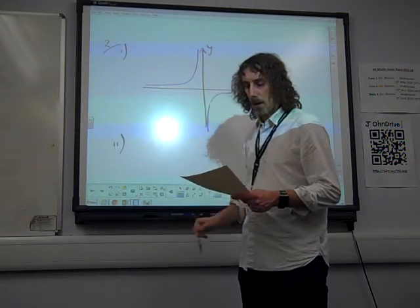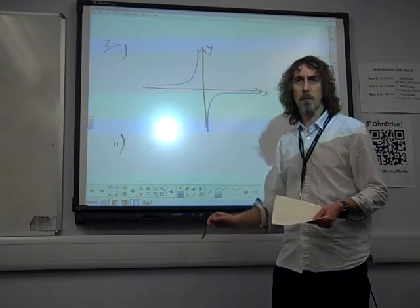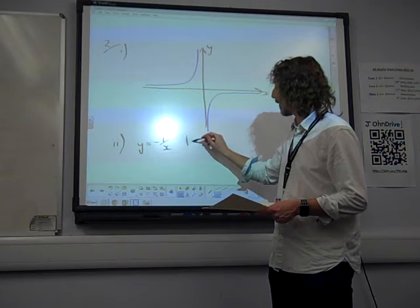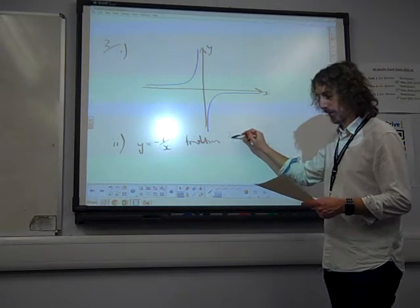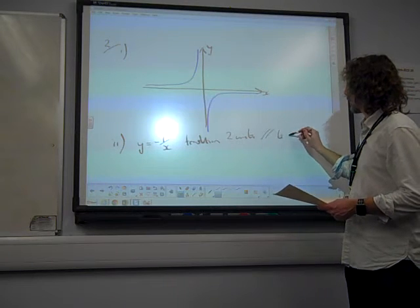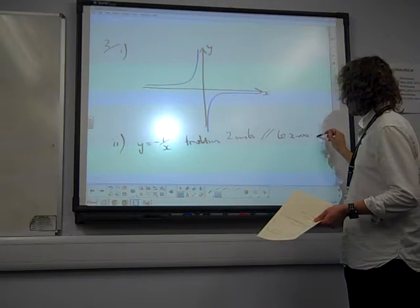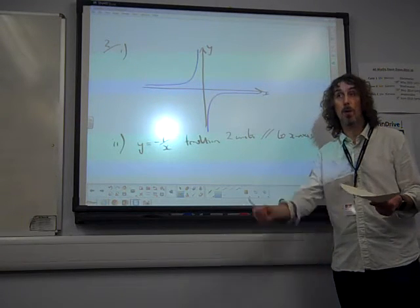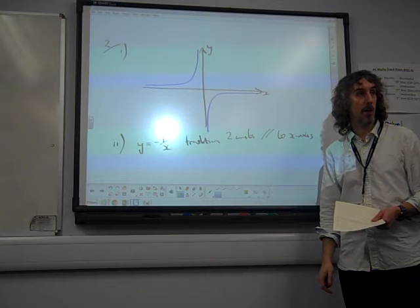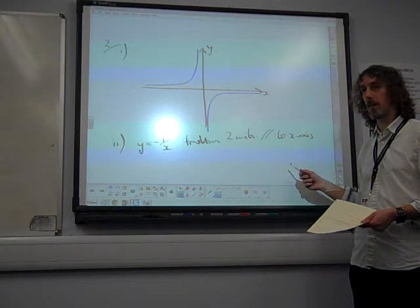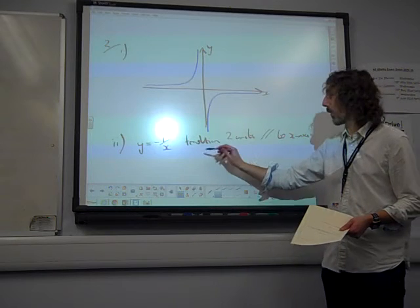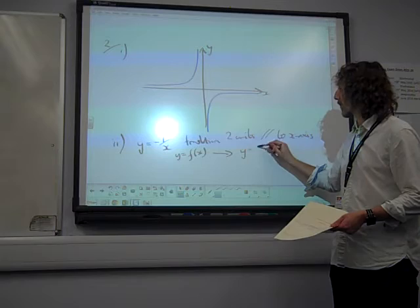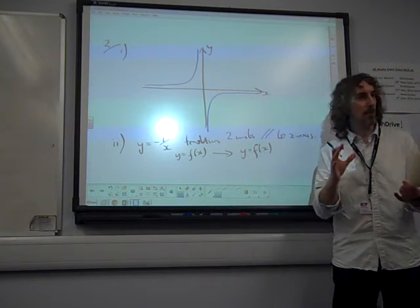Part two. The curve y equals minus one over x is transformed, translated by two units parallel to the x-axis. Now, what we're going to do with this is we're going to read this description and picture your poster where you've got written the four descriptions of these transformations.